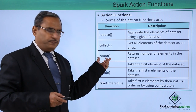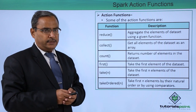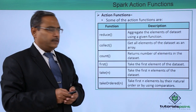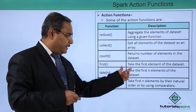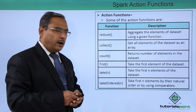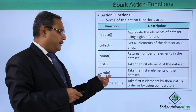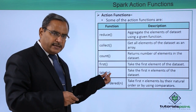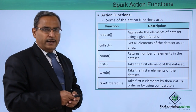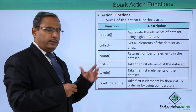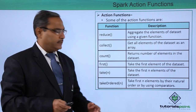The count function returns the number of elements in the dataset — it counts the number of elements. Next is the first function, which returns the first element of the dataset. Next is the take(n) function, where n is an input argument — it selects only the first n number of elements of the dataset.